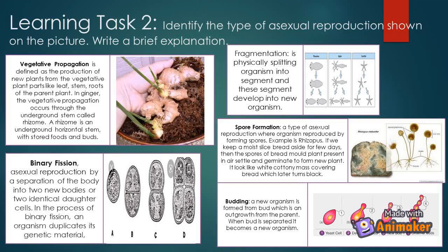Number three: fragmentation is physically splitting an organism into segments; these segments develop into new organisms. Number four: spore formation is a type of asexual reproduction where an organism reproduces by forming spores. An example is Rhizopus. If we keep moist sliced bread aside for a few days, the spores of bread mold present in the air settle and germinate to form a new plant. It looks like a white cottony mass covering the bread, which later turns black. Number five: budding — a new organism is formed from a bud, which is an outgrowth from the parent. When the bud is separated, it becomes a new organism.